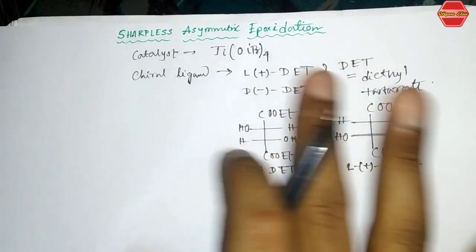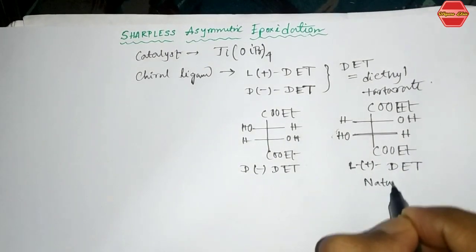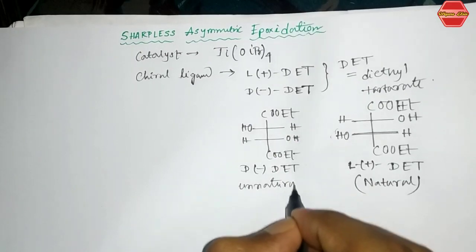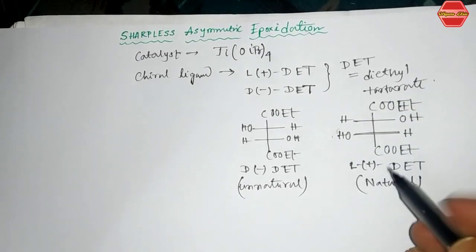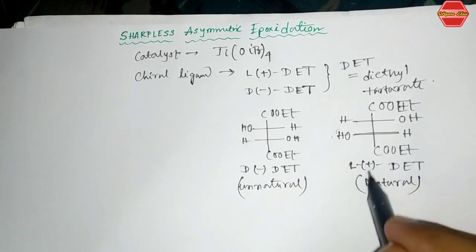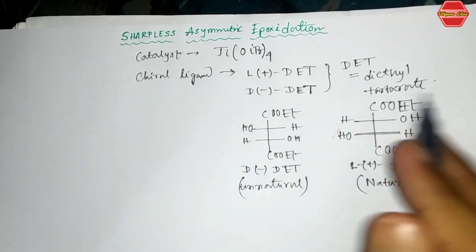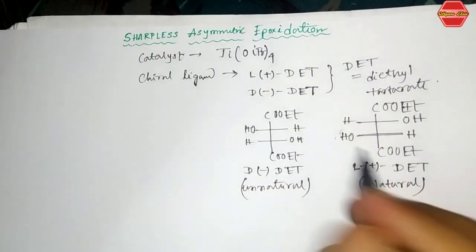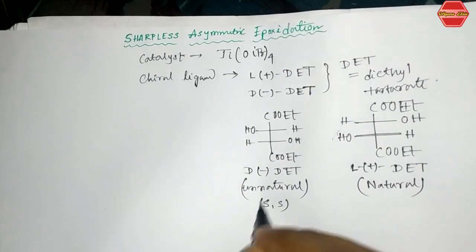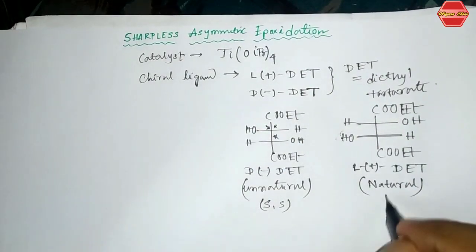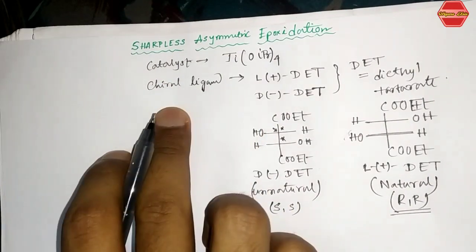L(+)-DET is called natural and D(−)-DET is called unnatural. The reason is that all natural tartaric acids are generally in the L form. The ester form in L configuration is natural, while D is unnatural. The configuration of both stereocenters in unnatural D(−)-DET is SS, meaning both centers are in R configuration.